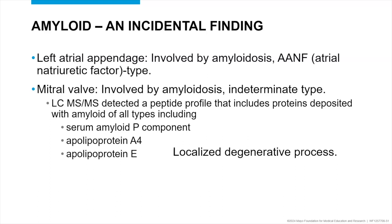This highlights how you can have different types of amyloid in the same patient depending on where you take the tissue from. In other patients, for example where you're worried about ATTR type and maybe you find something degenerative, looking at the actual organ that's impacted can be really important — so actually getting that cardiac biopsy. You can have multiple types of amyloid.